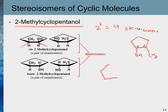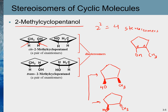In the cis isomer, both the hydroxyl group and the CH₃ group are in the same plane — both coming towards the viewer. In the trans isomer, one group is coming towards us and the other is going away. These two — cis and trans — are stereoisomers of each other but not enantiomers, because they are not mirror images of each other. Therefore these two are diastereomers.